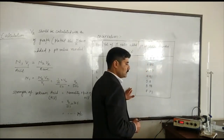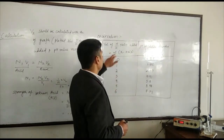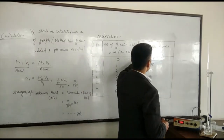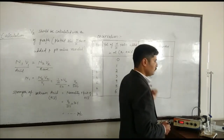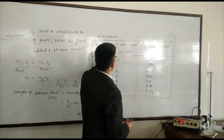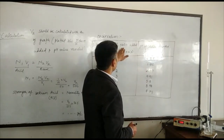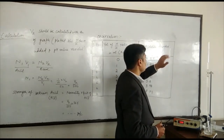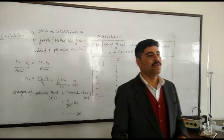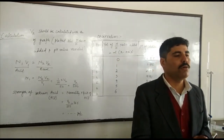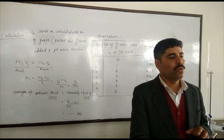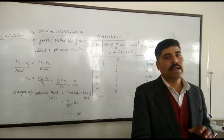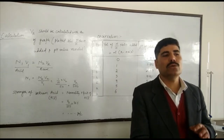Now with the help of these readings, we have to plot a graph between the volume of NaOH added and the pH value of the solution recorded. The volume of N/10 NaOH is placed on the x-axis, while the pH of the solution is placed on the y-axis. From this graph we can find out the volume of NaOH required — which we call V₂ — for the complete neutralization of HCl, taken at the equivalence point, which is at pH 7.